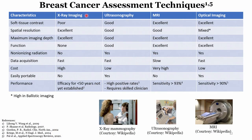Now let us look at different techniques other than histopathology for diagnosing breast cancer. There are four main techniques: x-ray imaging, ultrasonography, MRI (magnetic resonance imaging), and optical imaging. Today's course will focus on optical imaging. Looking at soft tissue contrast, ultrasound and MRI are very good compared to x-ray imaging, and optical imaging is also very good for characterizing soft tissue contrast.